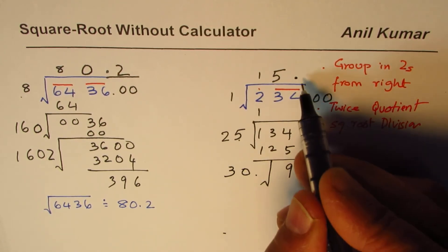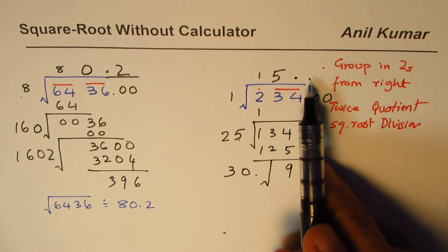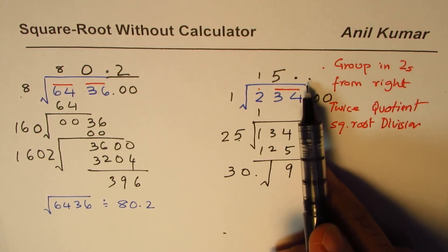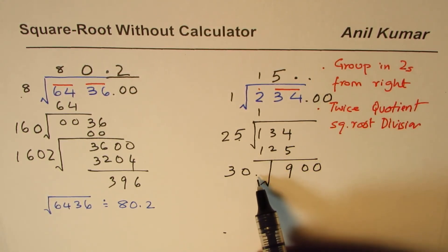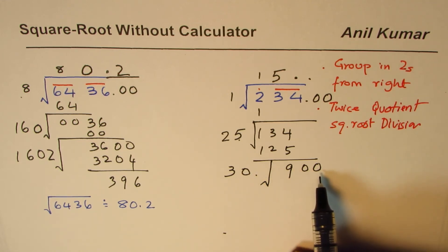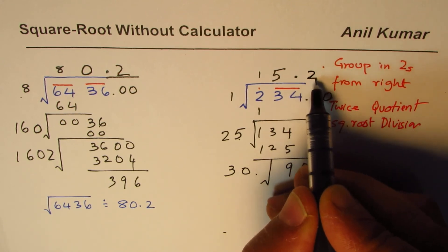Next number here - if I put 3 here then what do I get? 3 times 3 is 9, so we get 909, slightly higher, so I have to put 2.